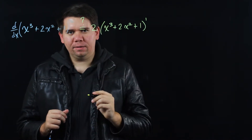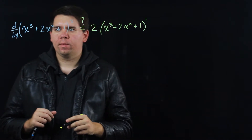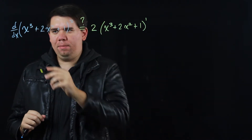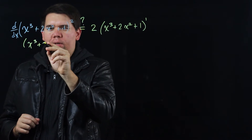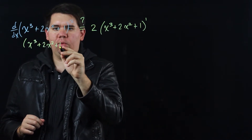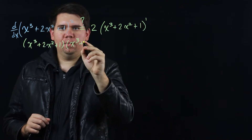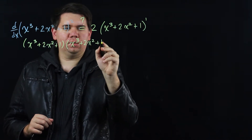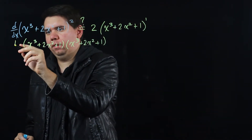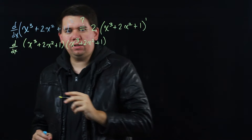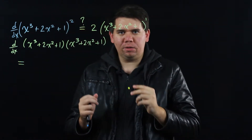But is that correct? Let's think about it a little bit more. This function squared is the same thing as x cubed plus 2x squared plus 1 times itself: x cubed plus 2x squared plus 1. So if we want to find the derivative of this function, we need to use the product rule.